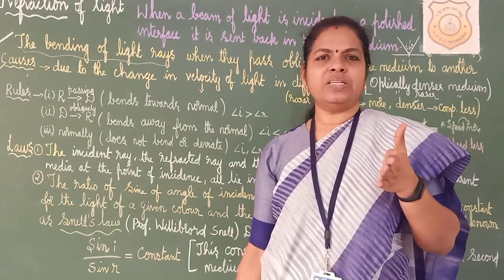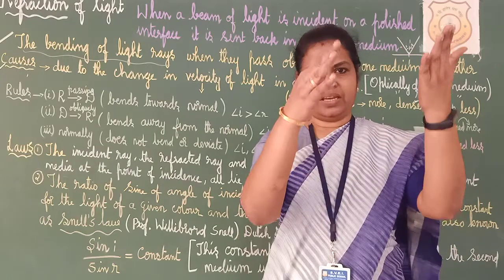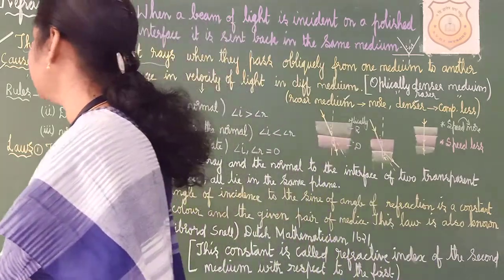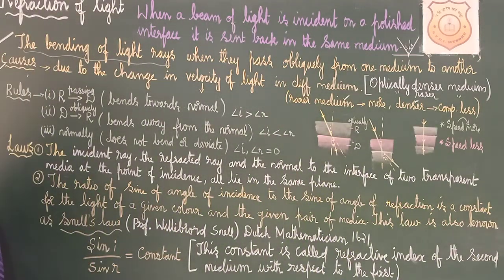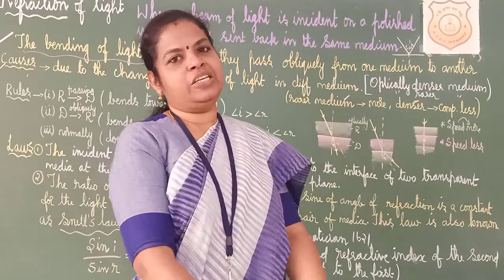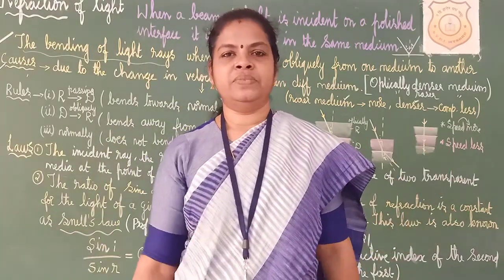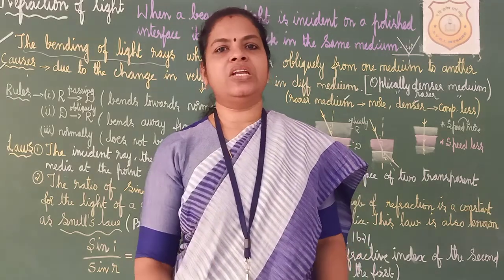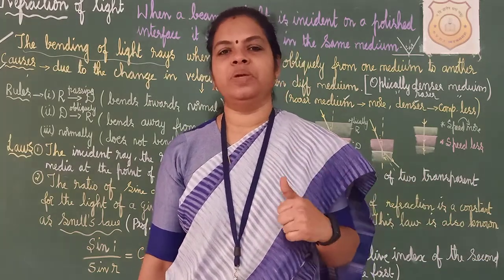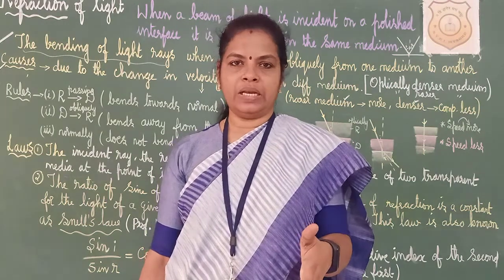Three rules are there. When you come inside school, you follow rules — you follow the yellow line. Same way, light also has three rules. First rule: when light moves from an optically rarer medium to a denser medium — like coming from home to school — it will bend towards the normal. You will be serious and conscious, so it bends towards the normal.